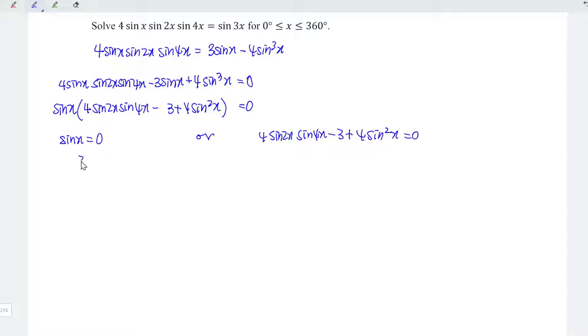Based on the first equation, x is equal to arcsin 0, which is equal to 0 degrees, 180 degrees, or 360 degrees.